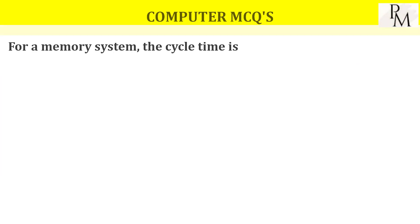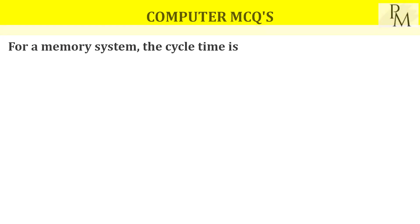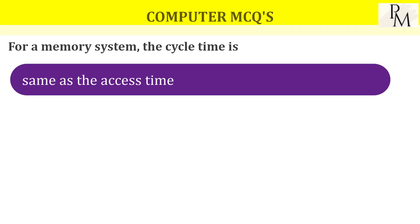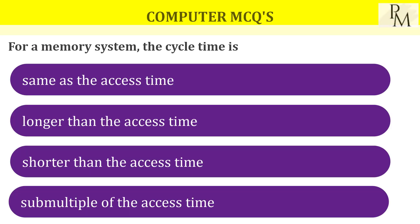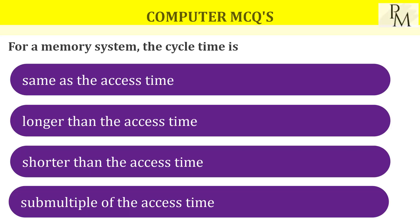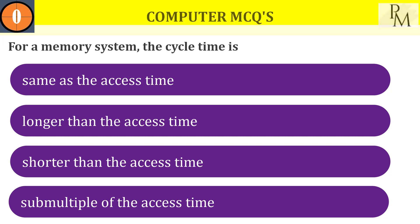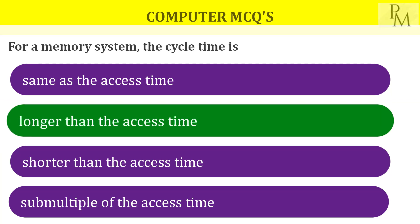For a memory system, the cycle time is? The options are related to access time — shorter or longer. For a memory system, the cycle time is of course longer than access time.